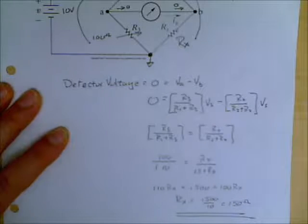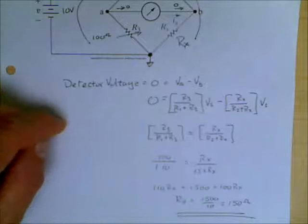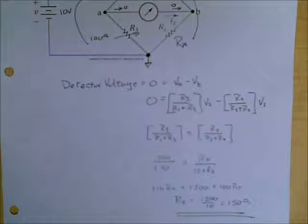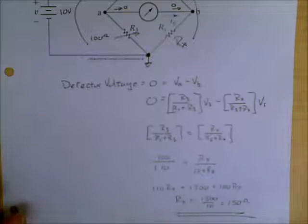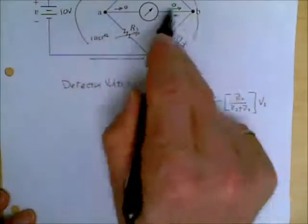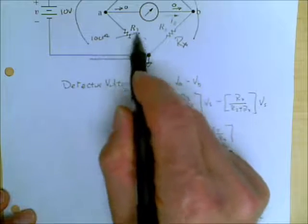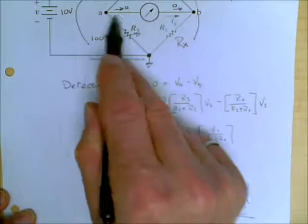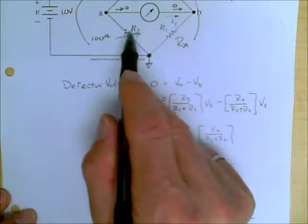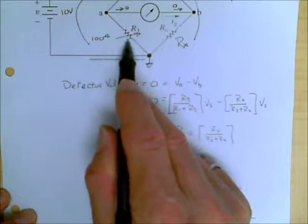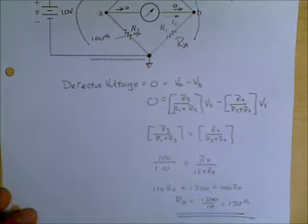We were given an unknown resistor and placed it into our bridge. The bridge initially had some voltage between A and B. We adjusted R3 until that voltage across A and B went to zero, and the value we found was R3 equal to 100 ohms. Therefore, we know that Rx is 150 ohms.